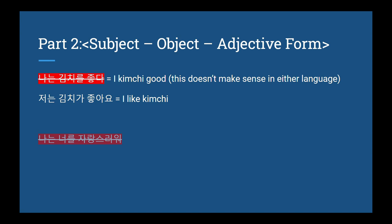Here's another example. You cannot say 나는 너를 자랑스러워 — that would not mean 'I'm proud of you,' it would just not mean anything. 나는 네가 자랑스러워 is what you're supposed to say.